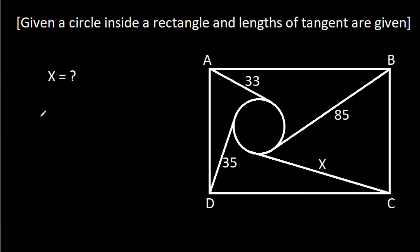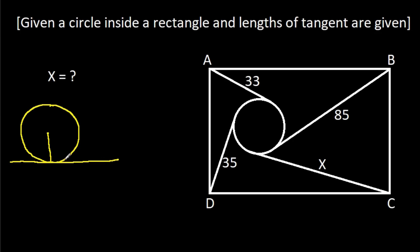We know that in any circle, the radius and tangent are perpendicular to each other. Suppose the center of this circle is O. Then this angle will be 90 degrees, this angle will be 90 degrees, and this angle will be 90 degrees.